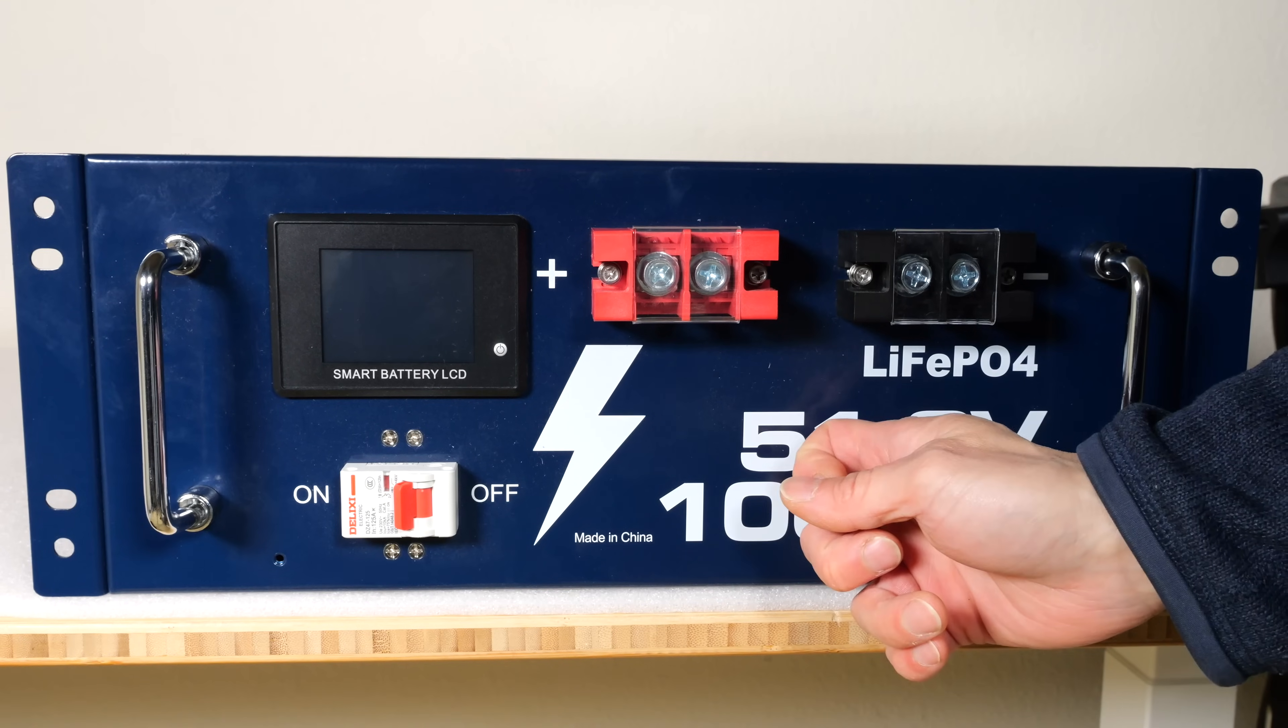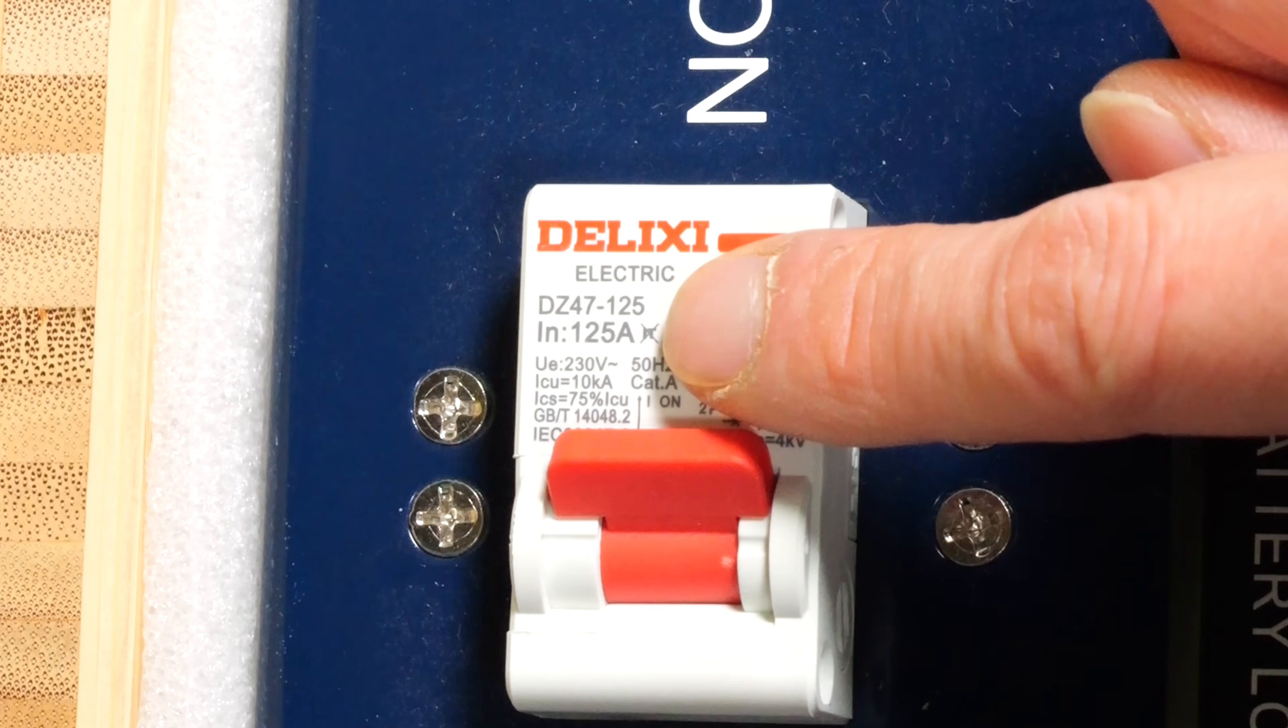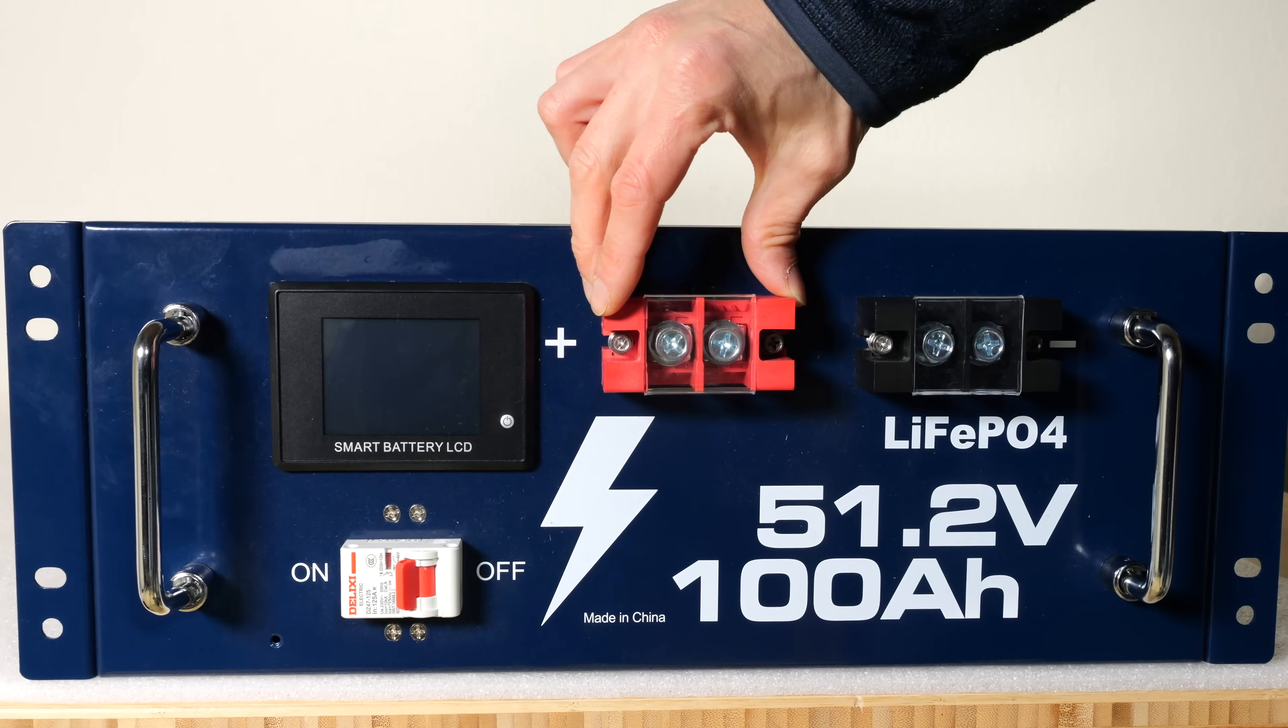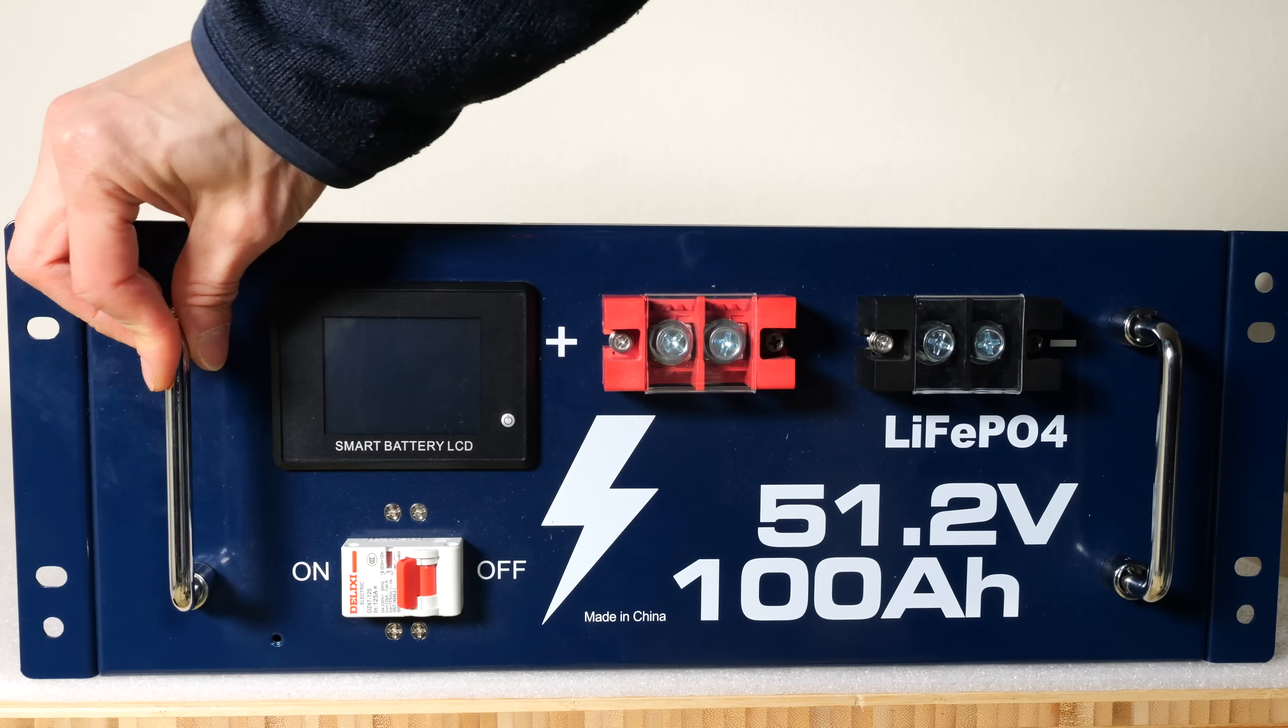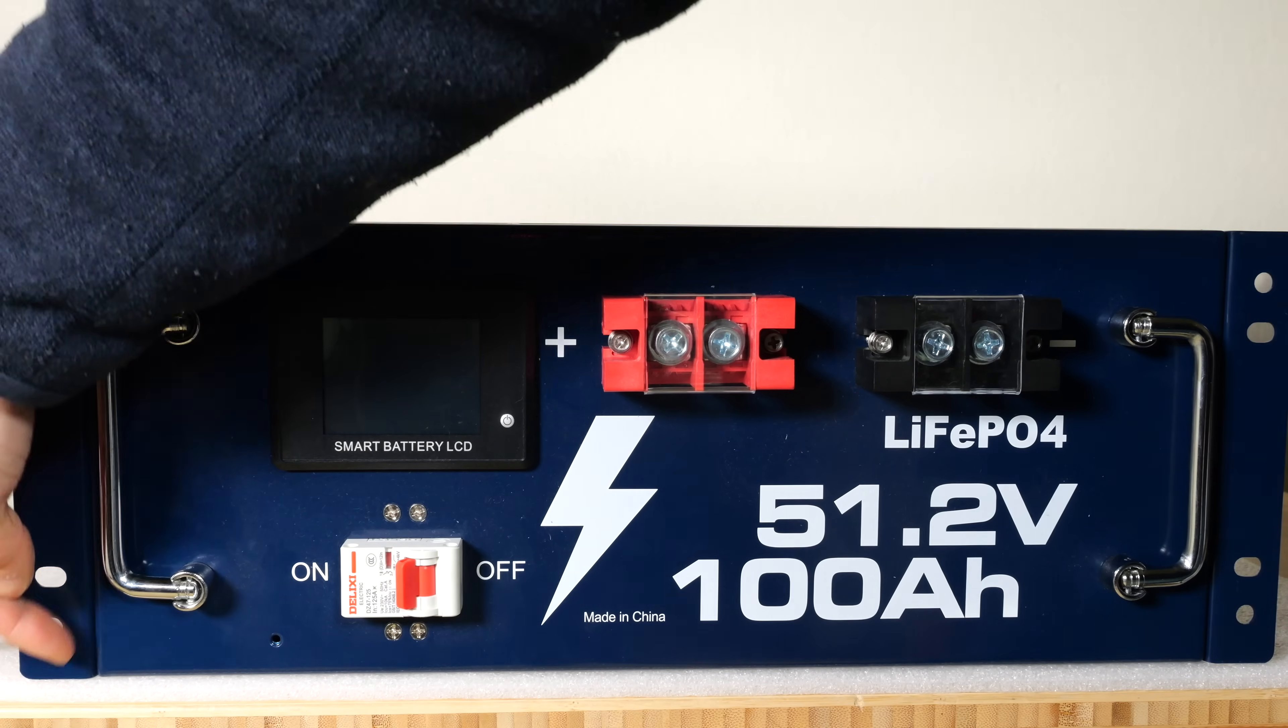You got two screw positions, so you can daisy chain them. You can parallel a couple of these together. It has a built-in fuse. This one is the Delisi Electric 125A fuse. If you disconnect this, it will be disconnected from these terminals here. The front handles are swivlable. It doesn't go this way, only outwards. And then on the side, you have the rack mount holes.